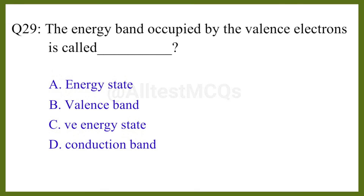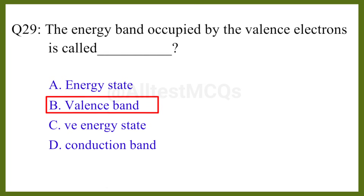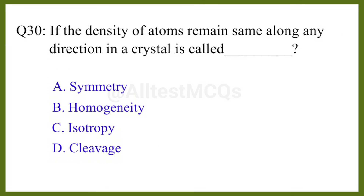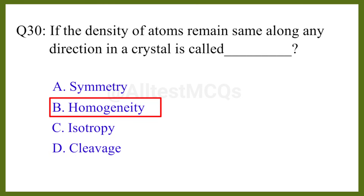Question number twenty-nine: The energy band occupied by valence electrons is called the correct answer is option B: valence band. Question number thirty: If the density of atoms remains the same along any direction in a crystal, it is called the correct answer is option B: homogeneity.